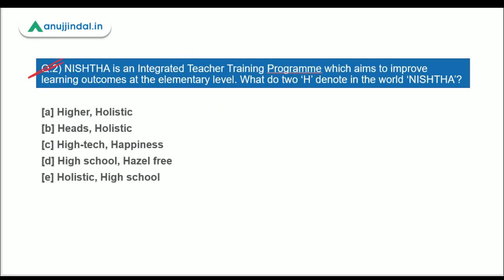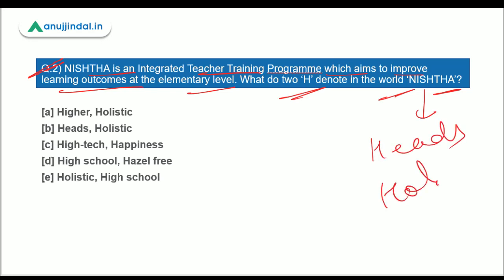Question 2: NISHTHA is an integrated teacher training program which aims to improve learning outcomes at the elementary level. What do the two 'H's denote in NISHTHA? The answer is Heads and Holistic — option B. If you remember the full form, you can easily tackle this question.